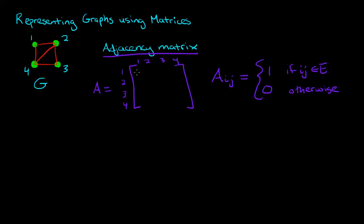If you look at the vertex 1 and you ask, is vertex 1 adjacent to vertex 1? The answer is no because that would be a loop, so you put a 0 here. Is vertex 1 adjacent to vertex 2? Yes, that is an edge, so you put a 1. Is vertex 1 adjacent to vertex 3? No it is not, so you put a 0. And is vertex 1 adjacent to vertex 4? Yes it is, so we put a 1.